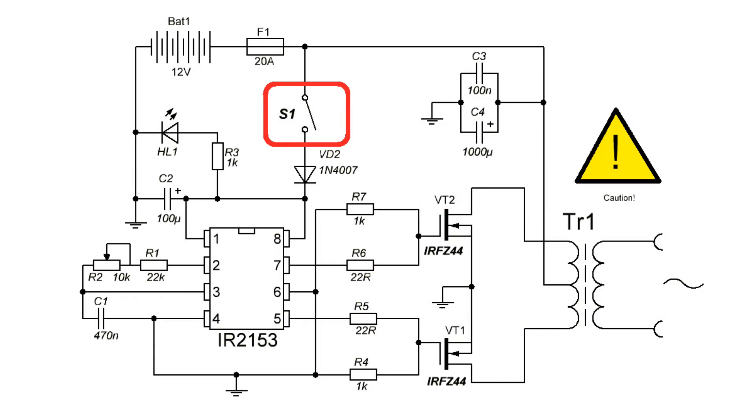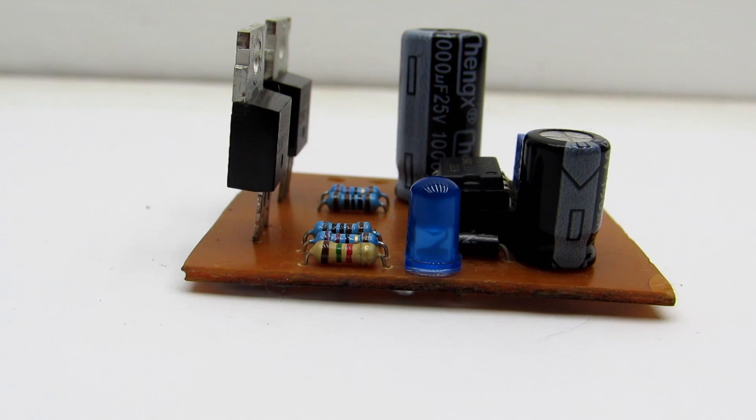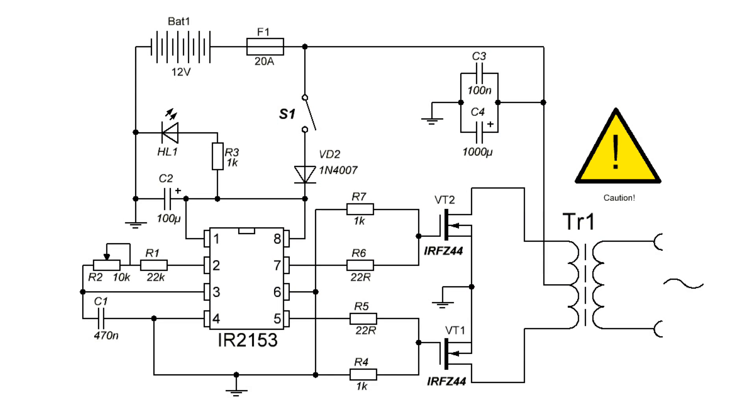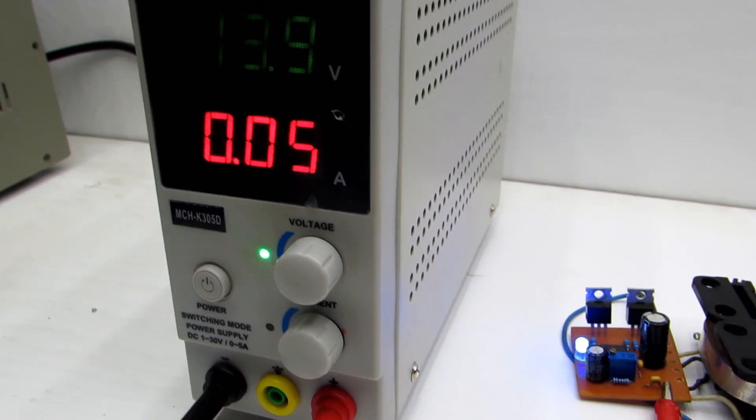Voltage to chip comes through the low power button S1 and diode VD2. Switch runs the converter and diode protects chip against reverse polarity. The scheme has no protection and stabilization. If not using the fuse F2, then in case of overload or short circuit, FETs will burn immediately.